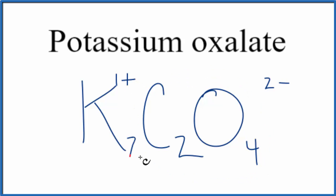If we had 2 potassium ions, 2 times 1 plus, that would give us 2 plus, and that would balance the 2 minus. That makes this the formula for potassium oxalate, K2C2O4.